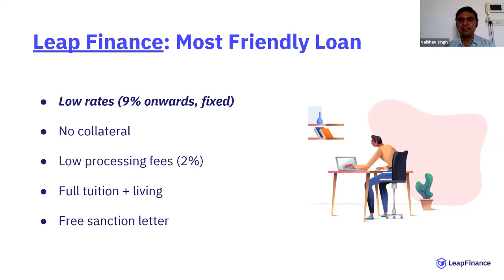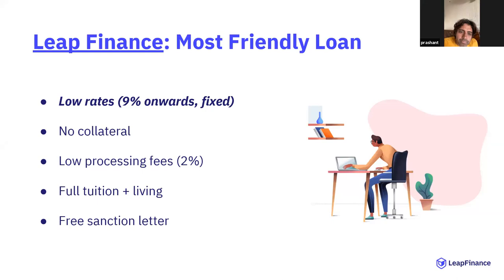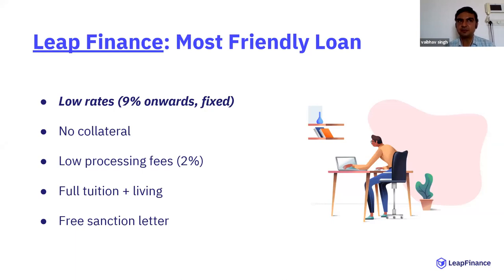The second point is that we back your future potential rather than the assets you or your family have. All our loans are unsecured — they do not require any form of collateral: no house, no FDs, no other savings. We truly believe that once you graduate from these top schools, you will do fantastically well. We are here to back that future potential — what you are going to become — rather than the family or wealth you come from.